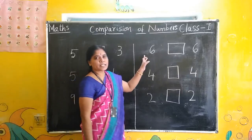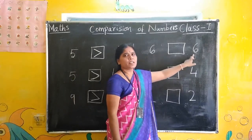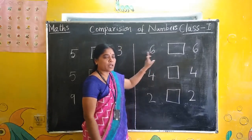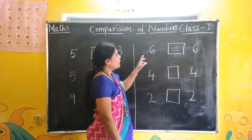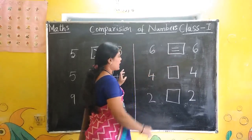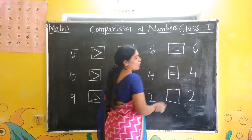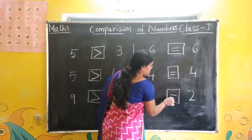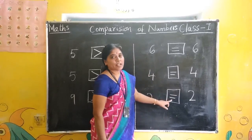Next. Look at these numbers: 6. Here is also 6 — same numbers. So what is the symbol we have to write for same number? Is equal to. For same number we are writing is equal to. Next: 4 and 4 — 4 is equal to 4. 2 and 2 — 2 is equal to 2. For same number we have to write is equal to symbol.